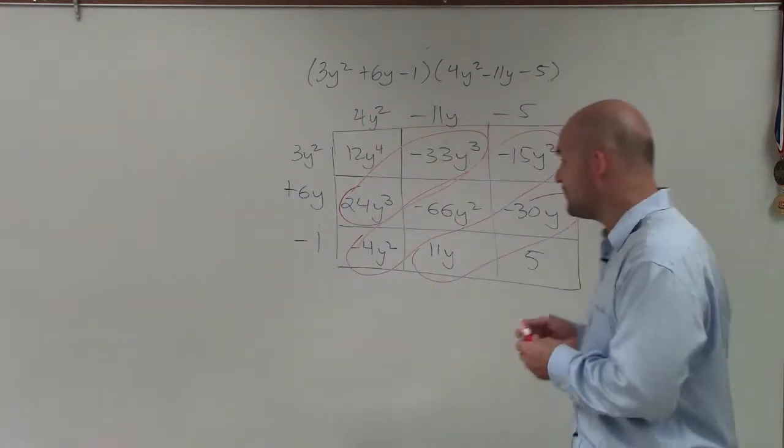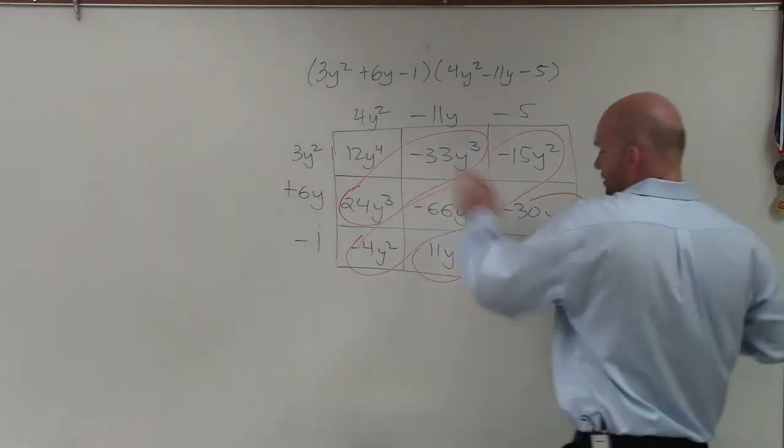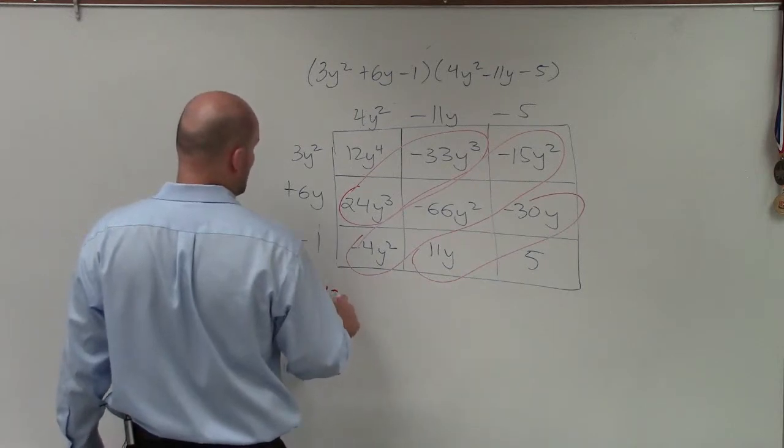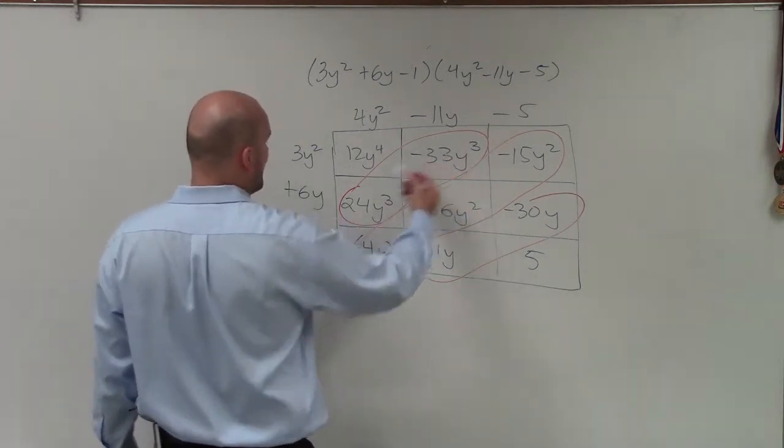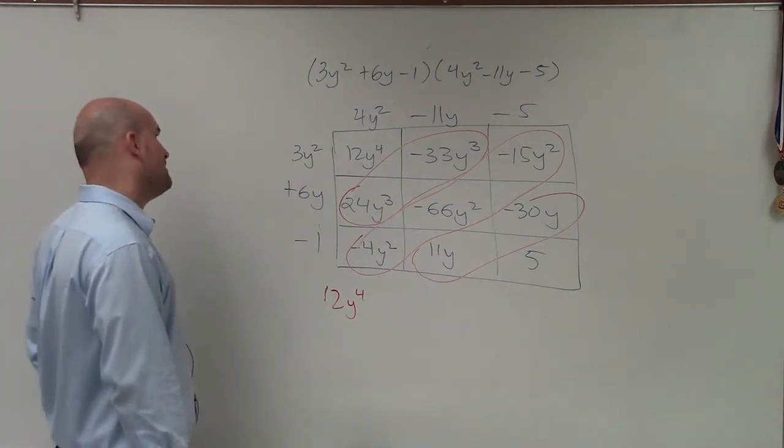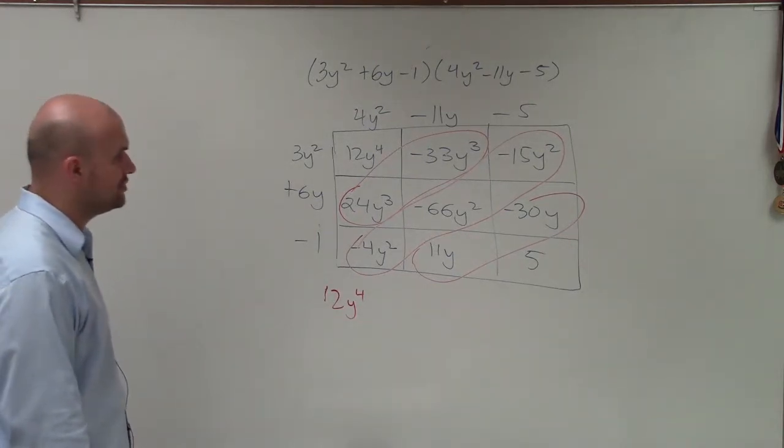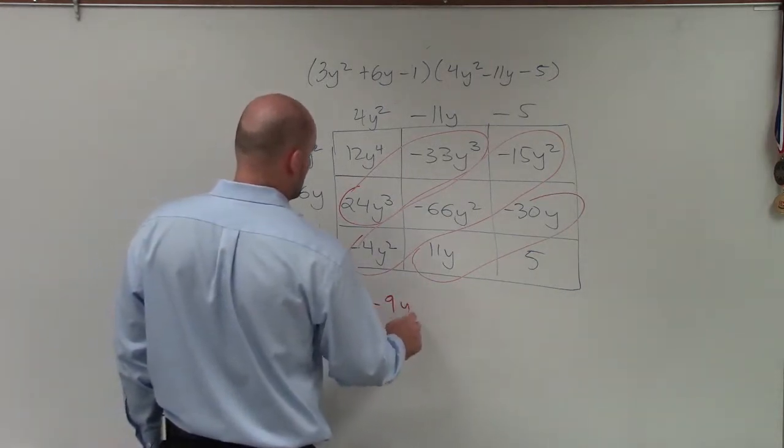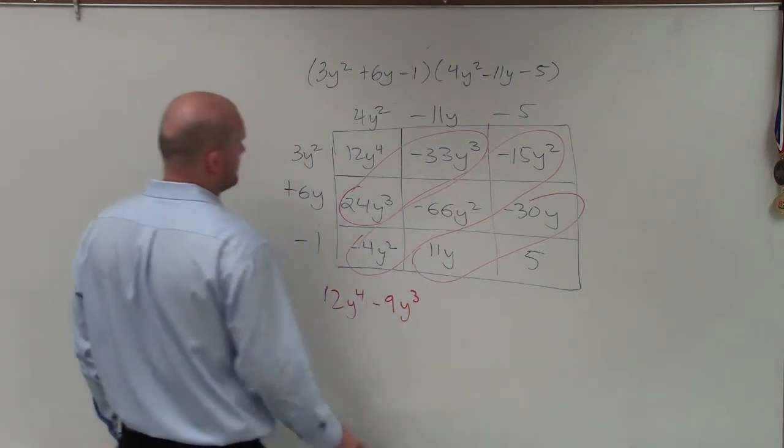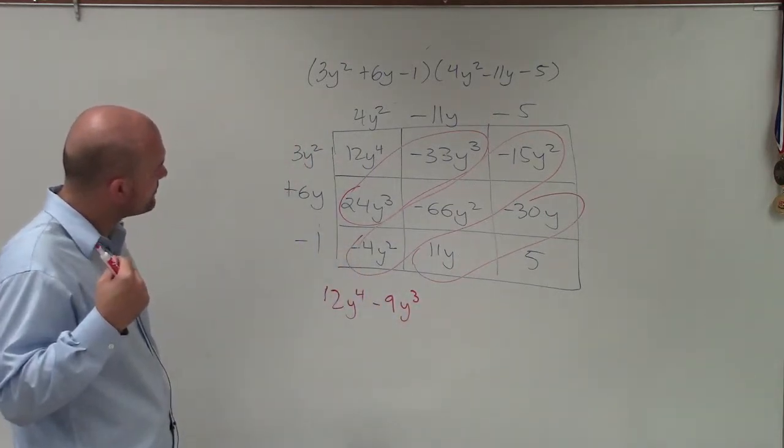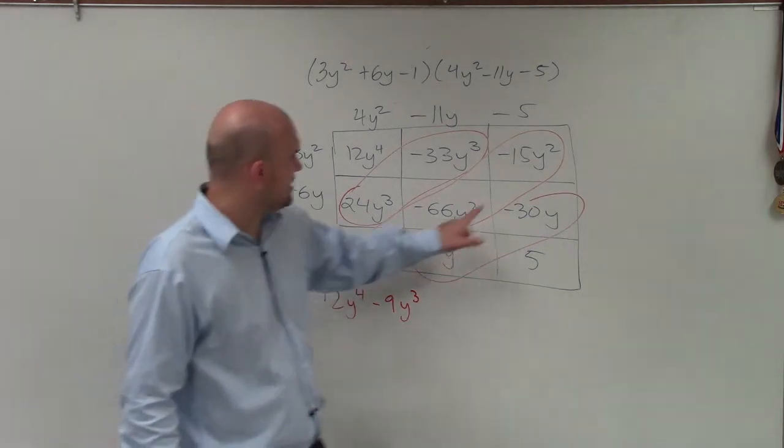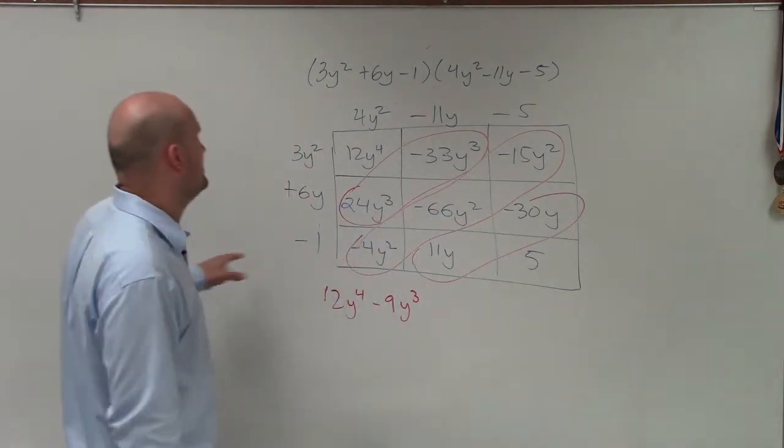So now as I'm writing out my expression, all I simply need to do is just take my first answer, or first part of my polynomial. My answer would be 12y to the fourth. Then I just combine 24y³ minus 33y³, which would be -9y³.